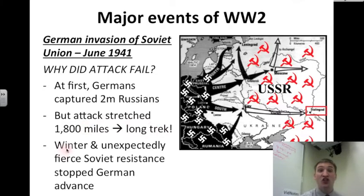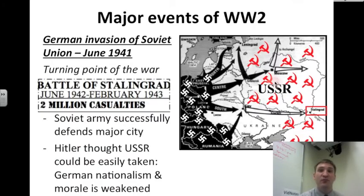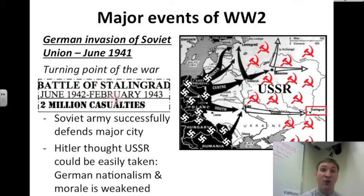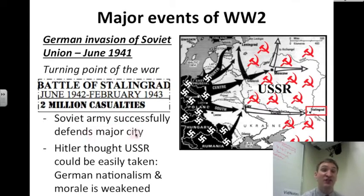The harshness of winter and an unexpectedly fierce Soviet resistance stopped the German advance. Also, the turning point of the war happens in the Soviet Union, in a city called Stalingrad, named after the leader of the Soviet Union at the time, Joseph Stalin. The fighting lasts months, from June 1942 to February 1943. It's bloody — two million soldiers experienced casualties. And the Soviet army successfully defends the major city of Stalingrad.